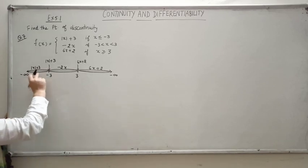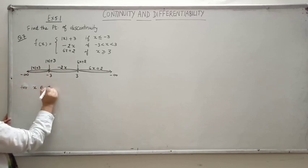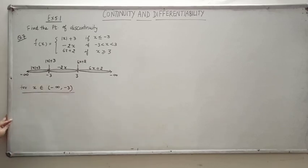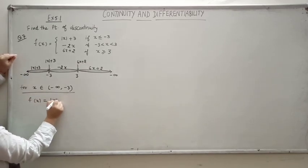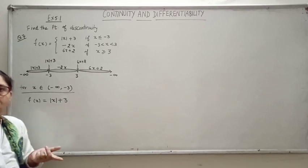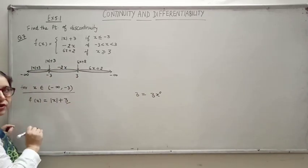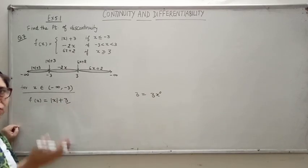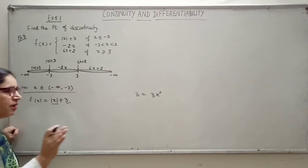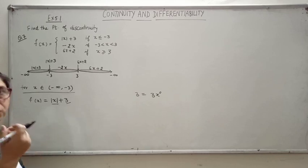First, check the continuity of the function in these three intervals. For x belonging to minus infinity to minus 3 (open bracket), the function is mod x plus 3. You know that modulus function is always continuous for all real numbers, as I told you in my previous lecture. Constant function is also always continuous, being a kind of polynomial.